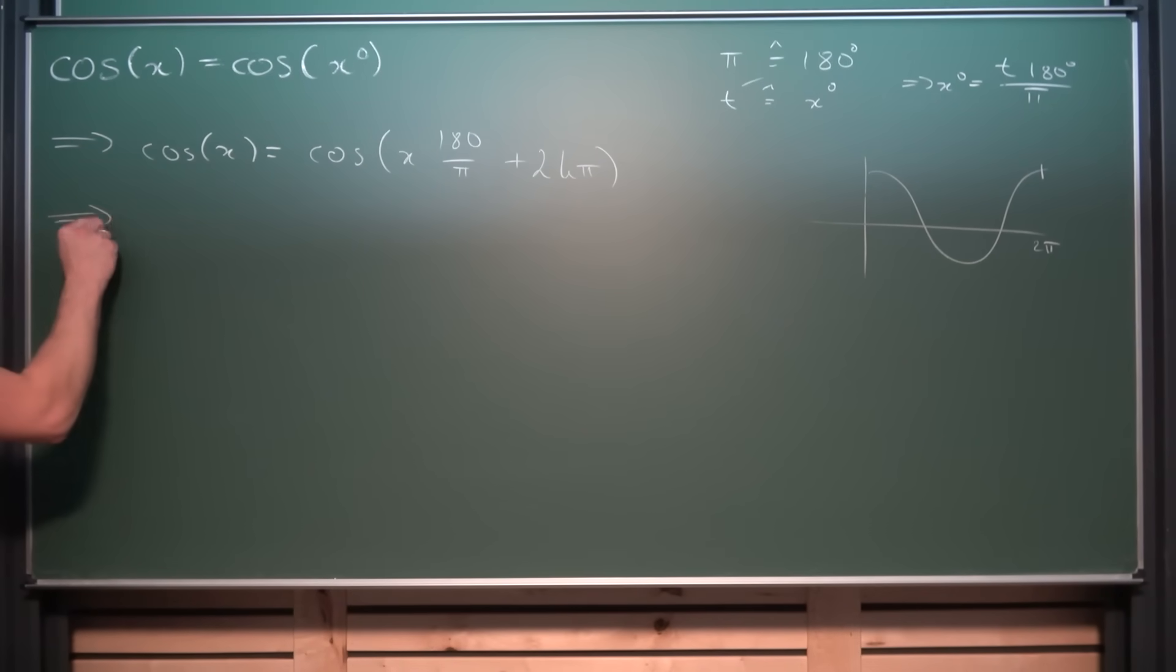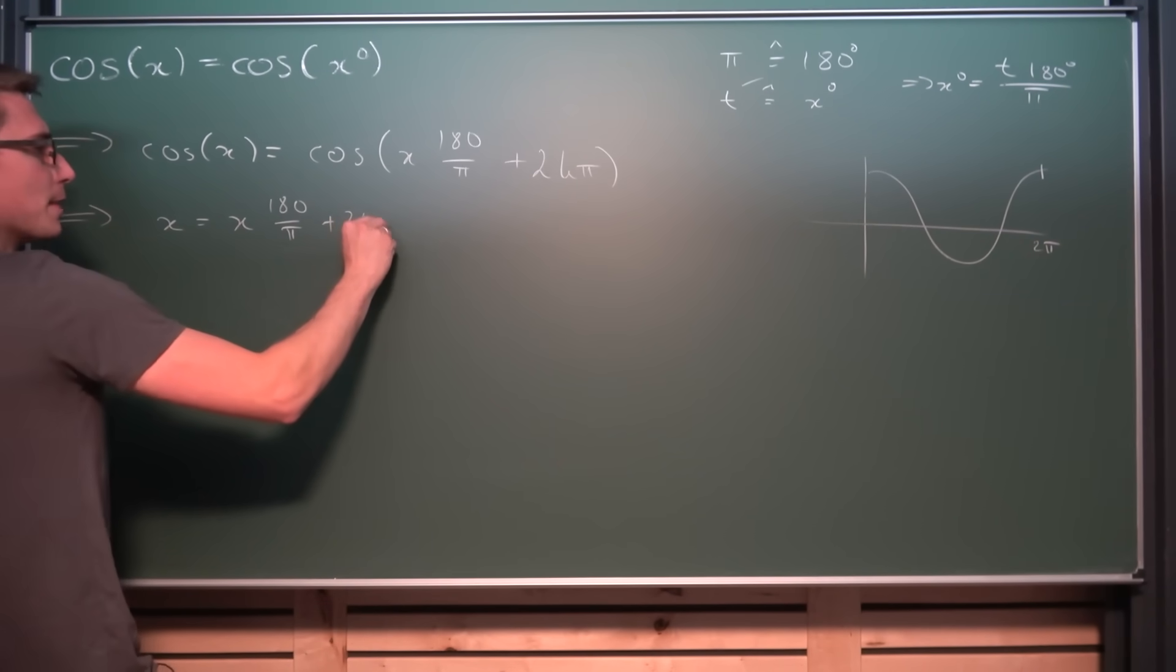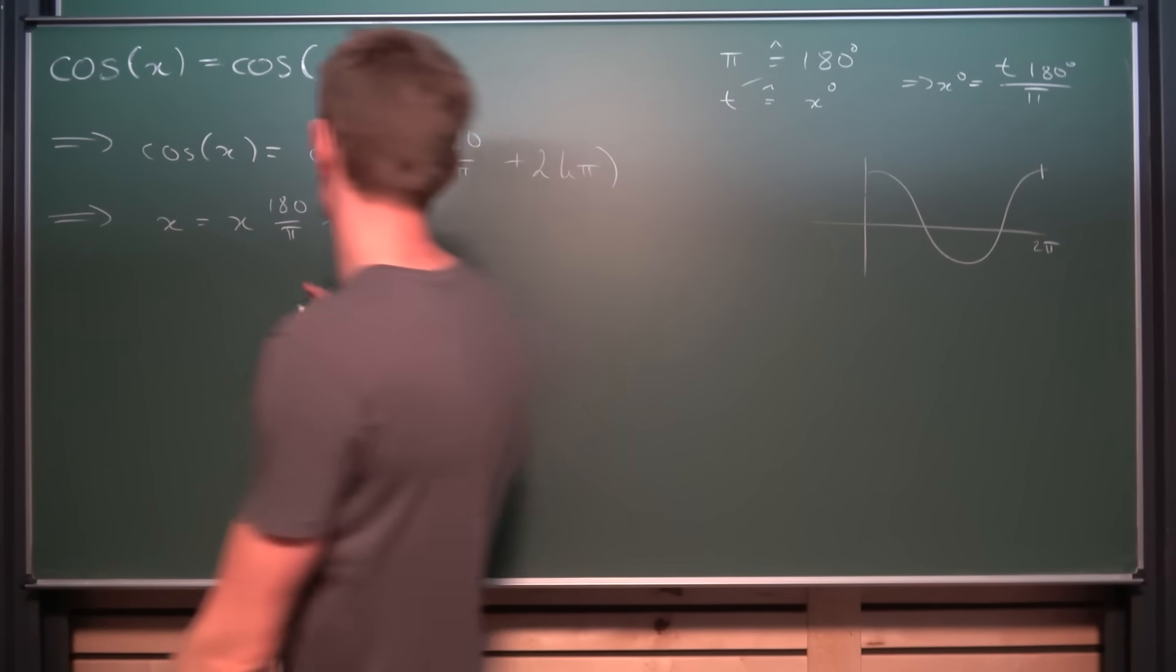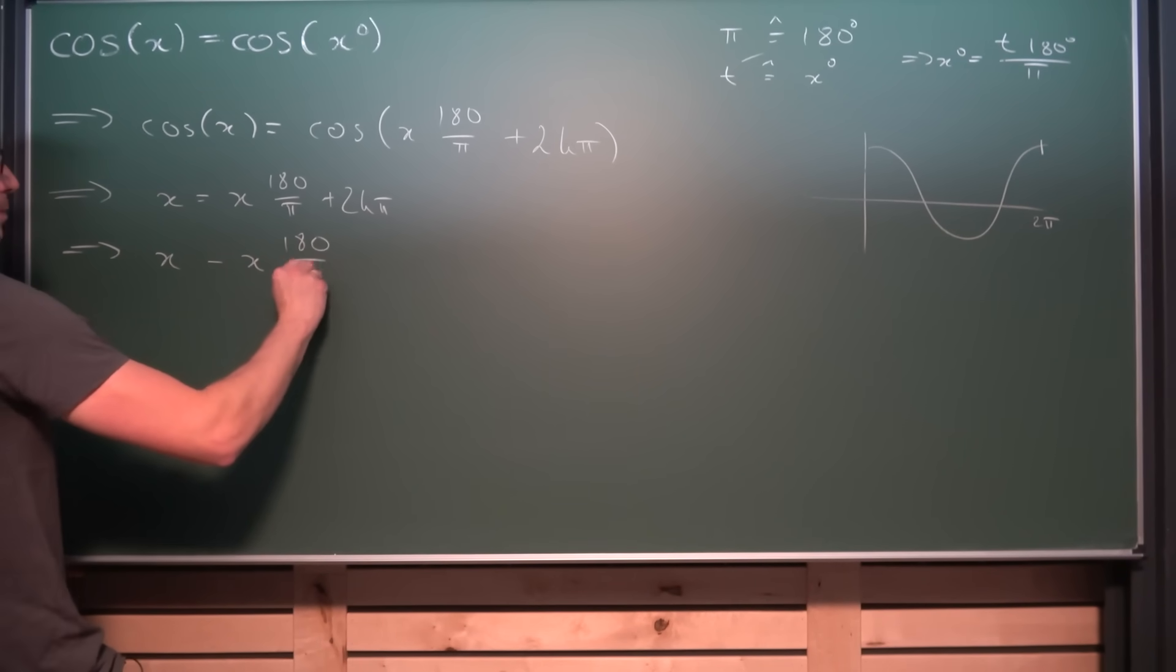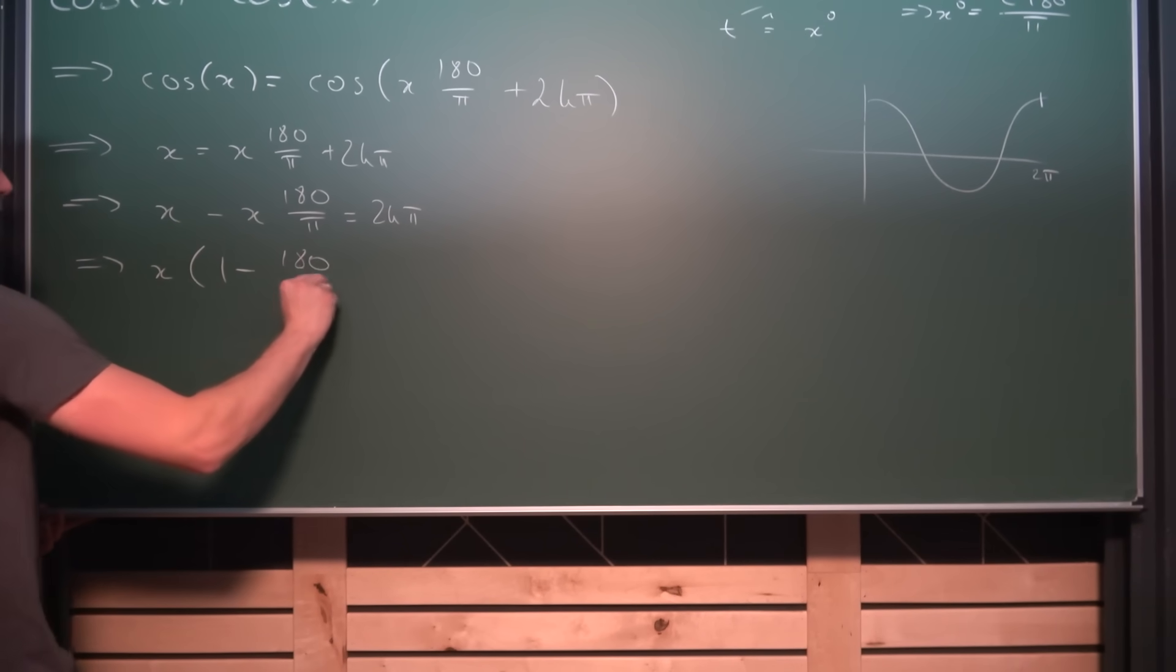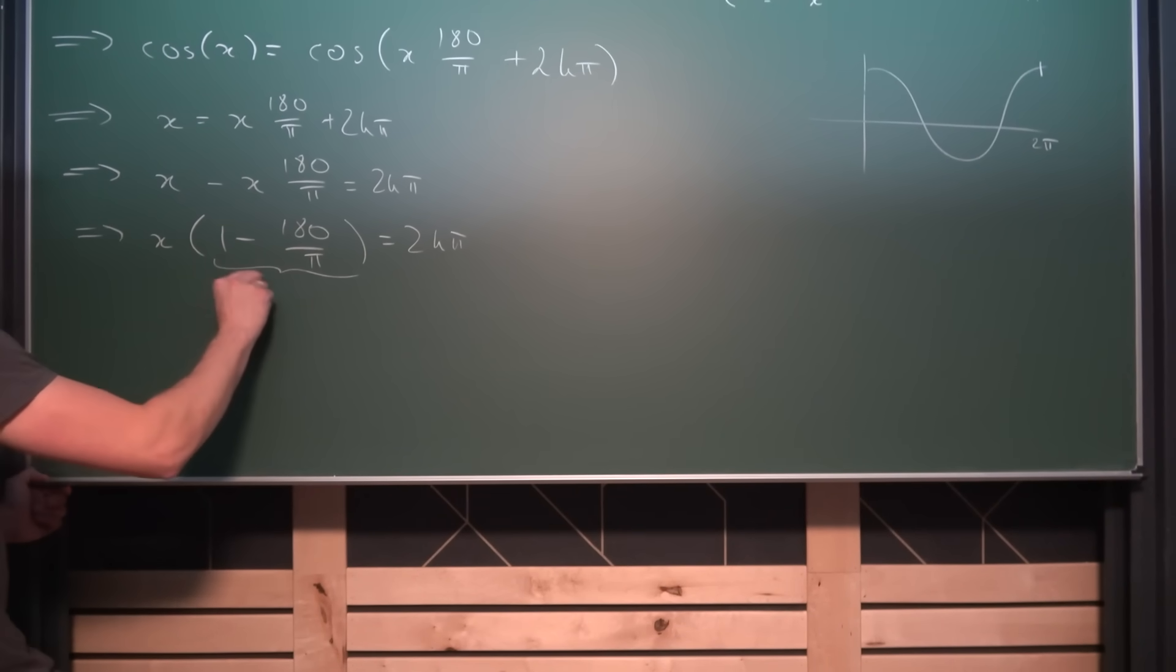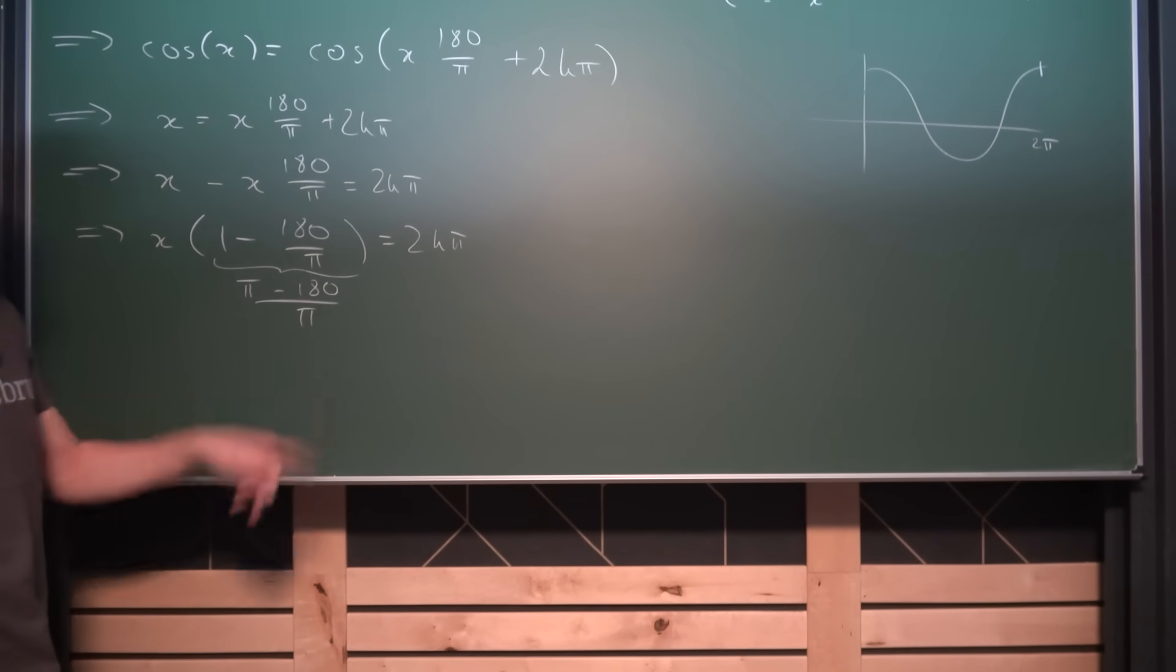We can make use of the inverse cosine on both sides, giving us that if we cancel out the cosines with the inverse cosine, x is equal to x times 180 divided by π plus 2kπ. And now we can just simply solve this whole thing for x by subtracting this part on both sides, giving us x minus x times 180 divided by π is equal to 2kπ. And now we can factor out the x here, giving us x times 1 minus 180 divided by π is equal to 2kπ.